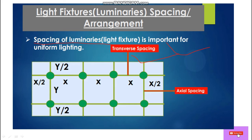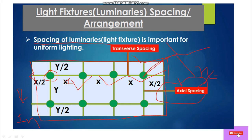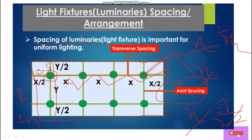When spacing the lights — meaning placement of lights — we place them in a uniform manner. There are two types of spacing: transverse spacing along the X axis, and longitudinal spacing along the Y axis. From the wall we consider X/2 — so if the distance between two lights is 1 meter, we leave 0.5 meters from the wall on each side, in both X and Y axes.